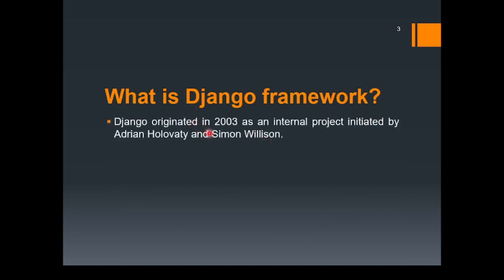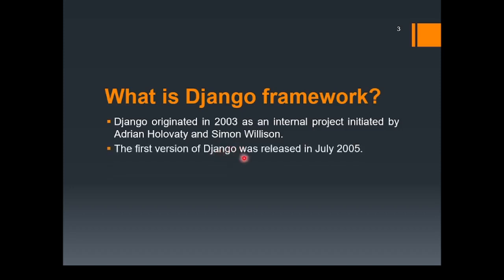Django originated in 2003 as an internal project, which was initiated by two programmers — Adrian Holoveri and Simon Willison. The first version of Django was released in July 2005.